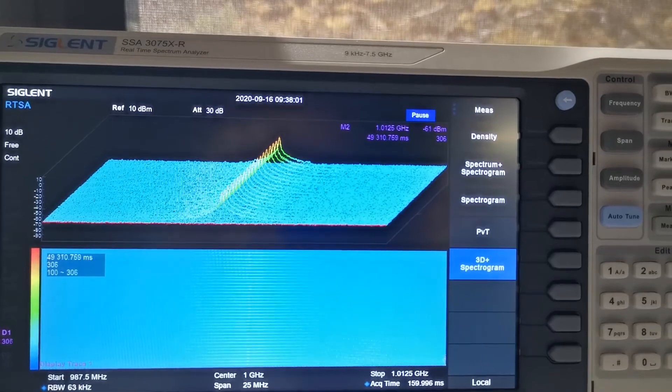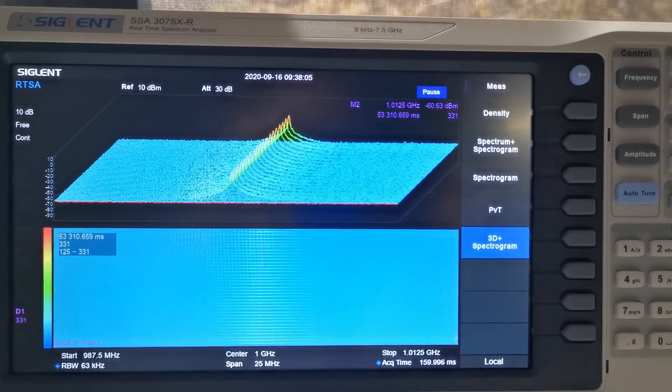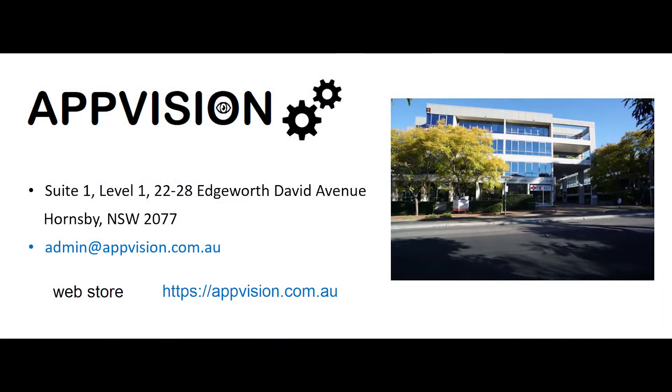Now we know that the real time spectrum analyzer is the only choice when you want to capture a transient signal or to get a gap free spectrum. That's so much for today. If you are interested in real time spectrum analyzer or you want to know anything more about RF testing, you're welcome to send an email to admin at abvision.com.au. Thank you for your time watching this video. And I will have more topics about RF testing in the future.